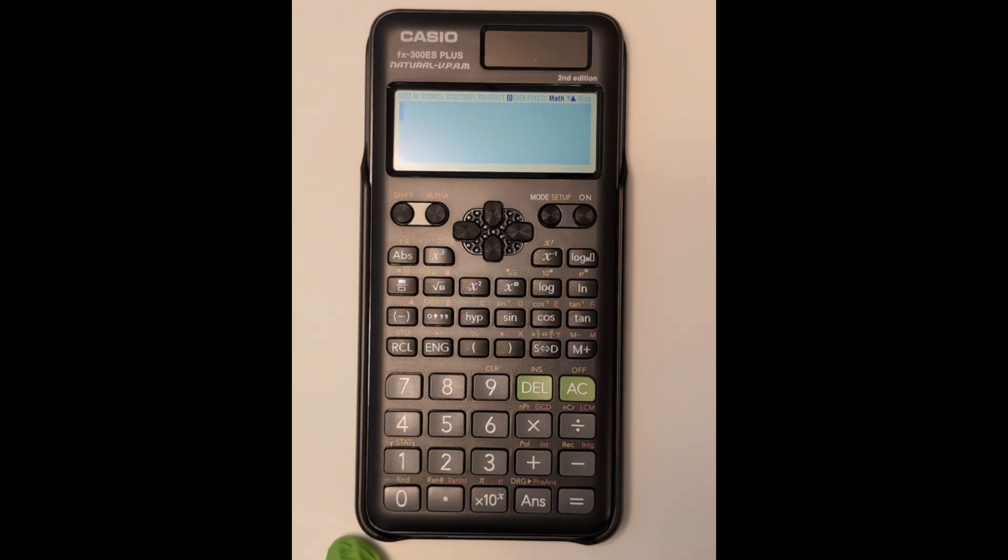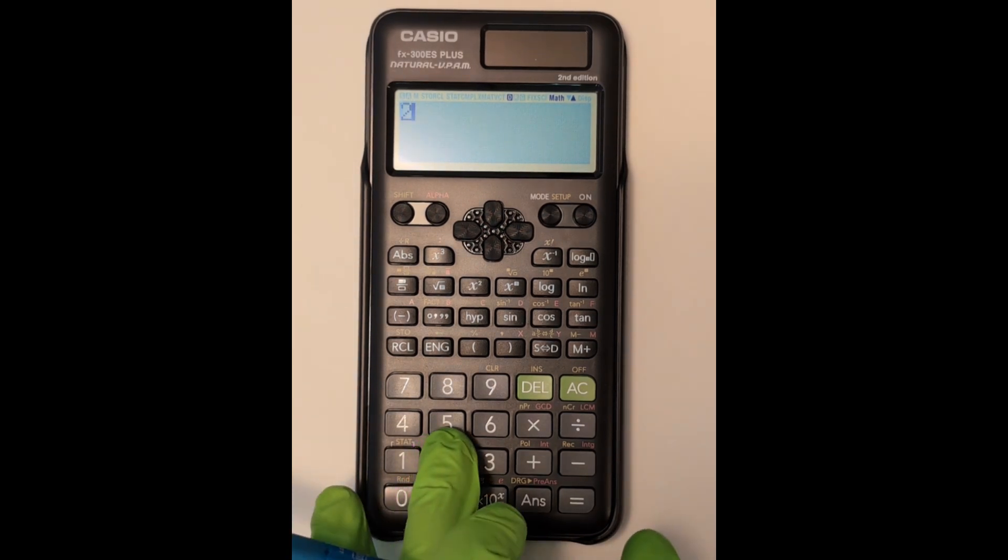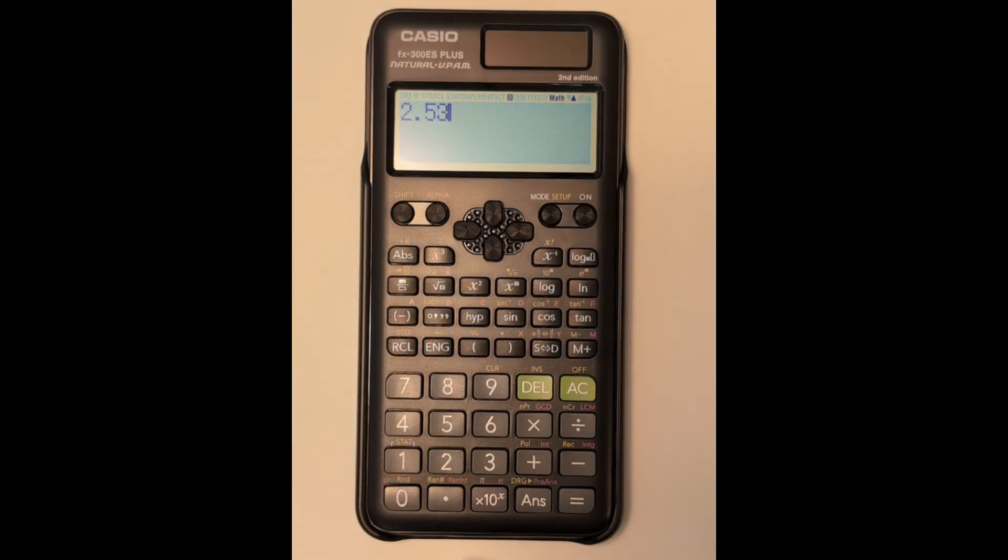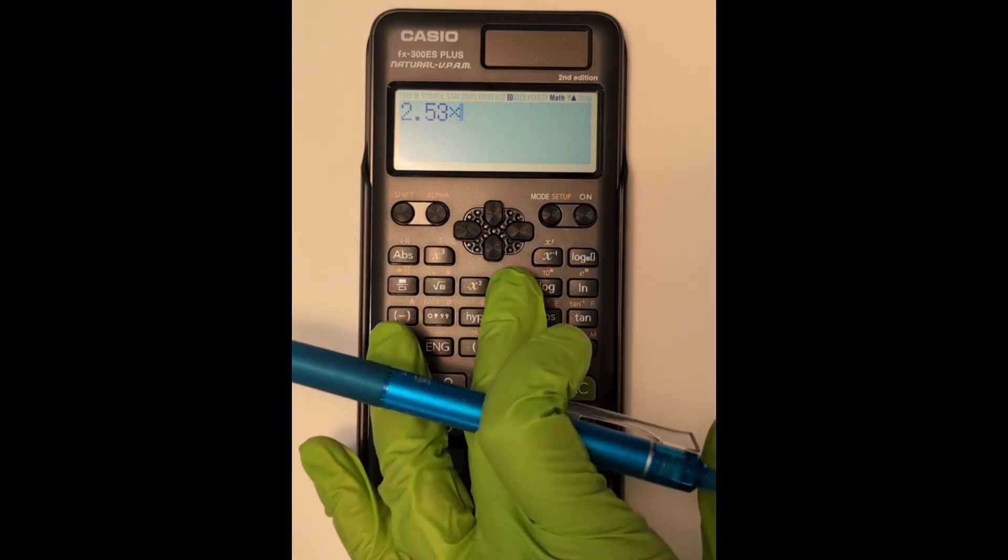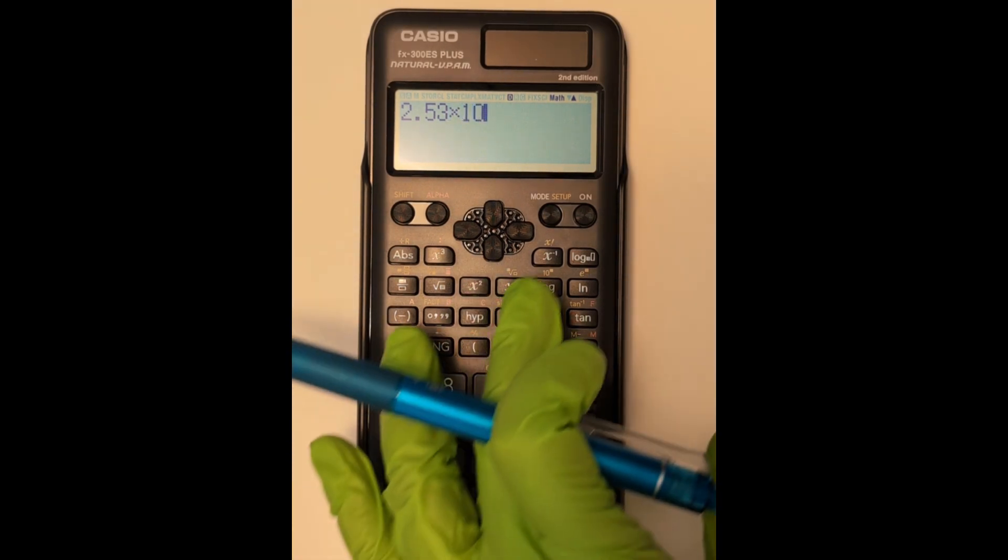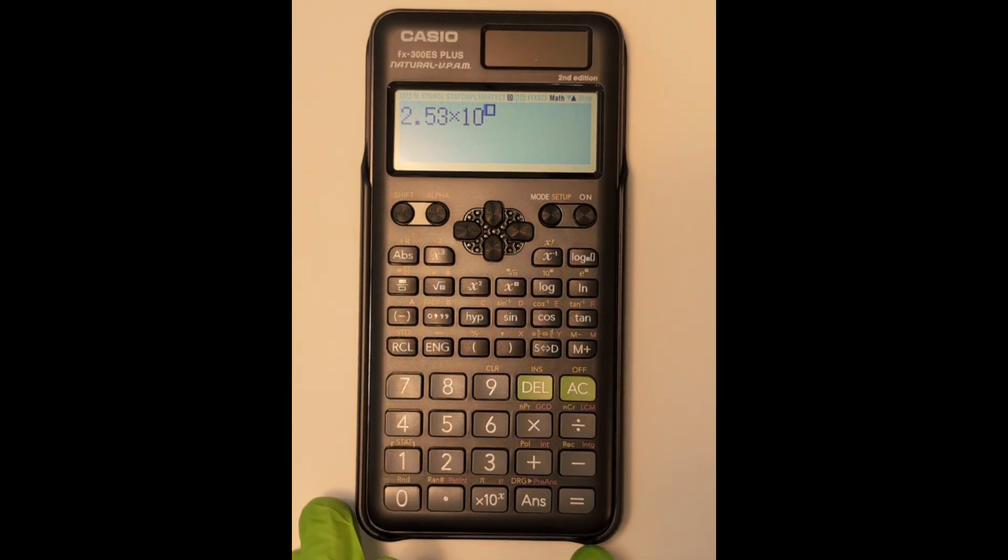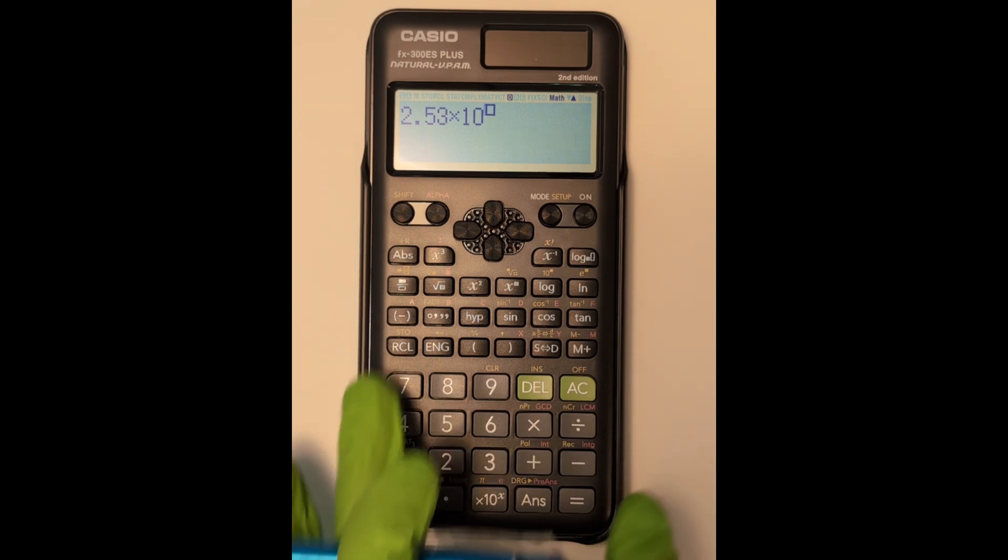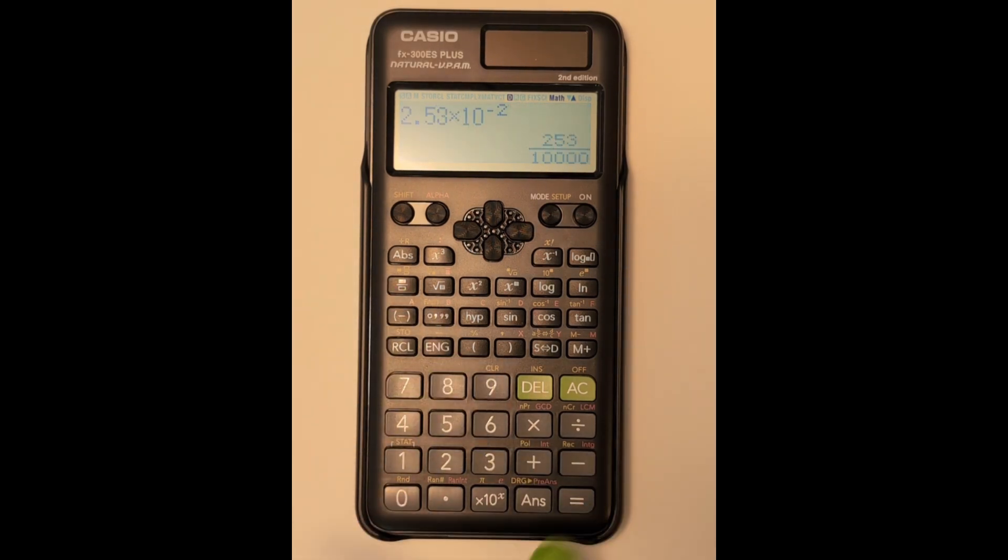Here is another example of entering a number in scientific notation. I enter in the value 2.53. In this case, I chose to hit the times button, enter 10, then the exponent button. I enter in the exponent, press equal, and then I use the SD button to get the answer in standard form, 0.0253.